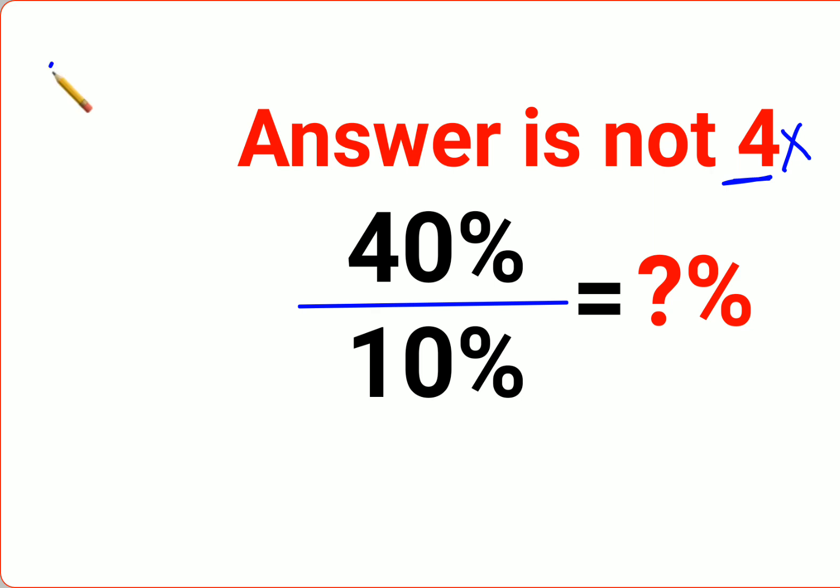We have 40 percent. 40 percent can be written as a fraction by dividing 40 by 100. Similarly, 10 percent can be written as 10 upon 100. So basically, 40 upon 100 got divided by 10 upon 100.